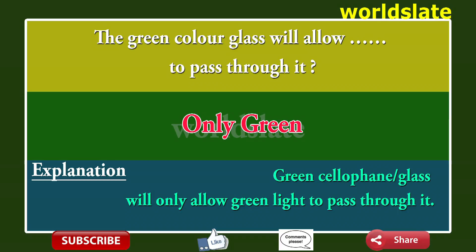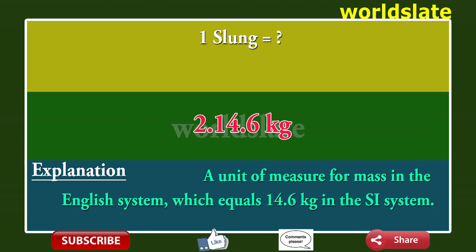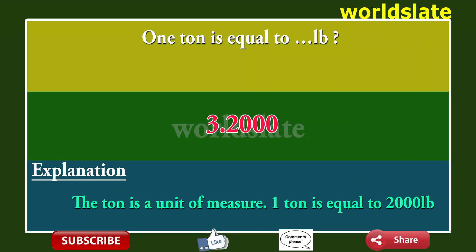Question: Green color glass will allow which color to pass through it? Answer: Only green. Explanation: Green cellophane glass will only allow green light to pass through it. Question: One slug equals what? Answer: 14.6 kilograms. Explanation: A slug is a unit of measure for mass in the English system, which equals 14.6 kilograms in the SI system.